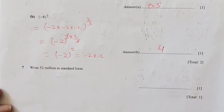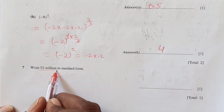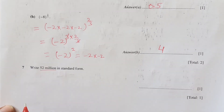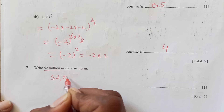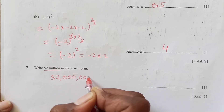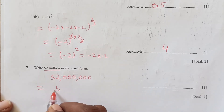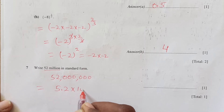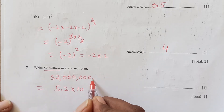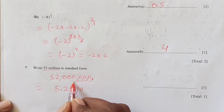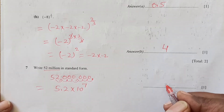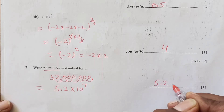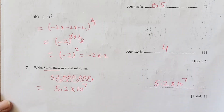Now: write 52 million in standard form. 52 million written out is 52,000,000. Standard form means one digit before the decimal, so 5.2. Our decimal moves 7 places to the right, so the answer is 5.2 × 10^7.